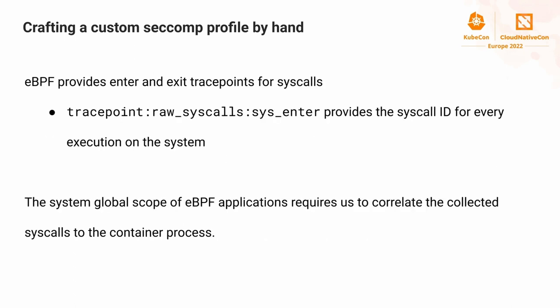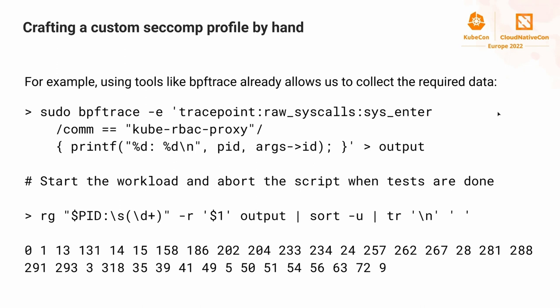eBPF is a technology which allows us to run code inside the kernel by loading it dynamically. It supports a bunch of trace points - for example the `raw_syscall/sys_enter` trace point gets executed for every syscall on the whole system, even before the syscall is executed. This provides a mitigation point for the syscall. We have to be aware that it always runs in global scope of the whole system, so we have to correlate process information to the container, the same way as with audit logging.